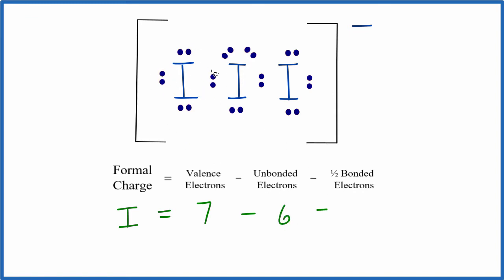And then bonded, we have these 2 right here. And we're going to divide that by 2. So for this iodine right here, the formal charge, 7 minus 6, that's going to be 1. And then 1 minus 1 gives us 0. So we have a formal charge of 0 right here.